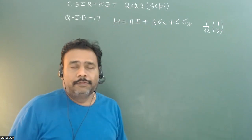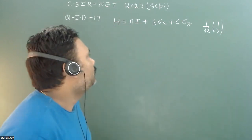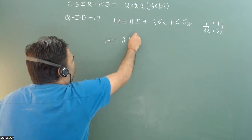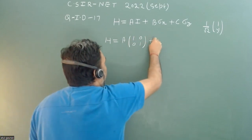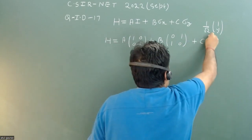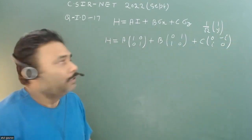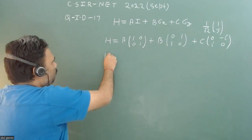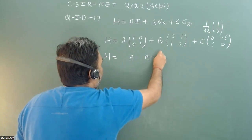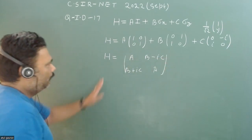We first calculate the eigenvalues of this matrix, then apply the eigenvalue-eigenvector condition to find y. The H matrix is: a times the 2×2 identity matrix [[1,0],[0,1]], plus b times sigma_x which is [[0,1],[1,0]], plus c times sigma_y which is [[0,-i],[i,0]]. Writing this out, H equals [[a, b-ic],[b+ic, a]].